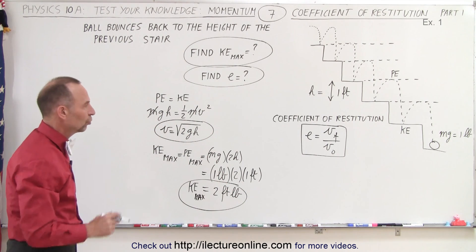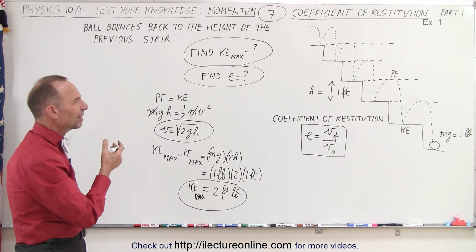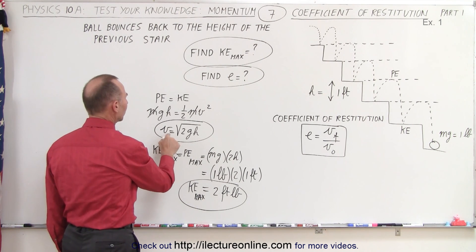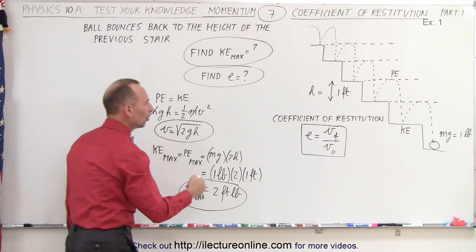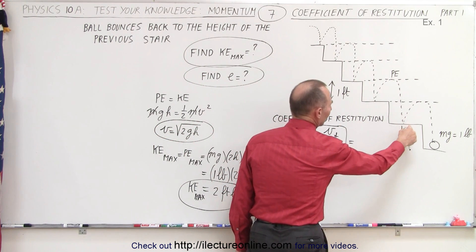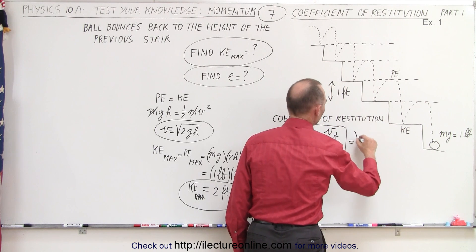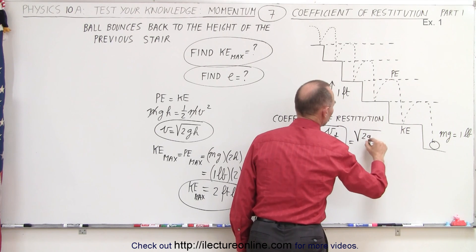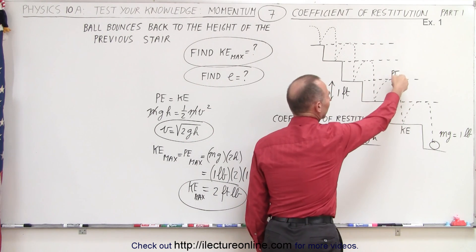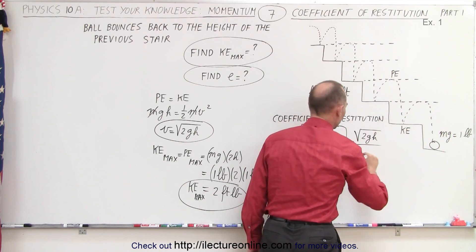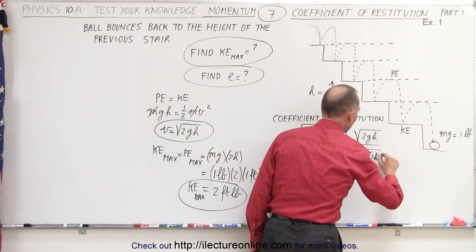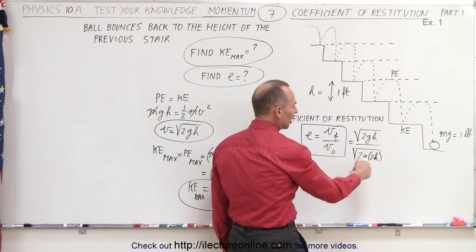But now the coefficient of restitution. How do we find the final velocity? Well, notice going back over here, the velocity is equal to the square root of 2gh. So in this case, the final velocity would be the velocity necessary to make it a height of one step. So it would be the square root of 2gh. And the initial velocity is the velocity it gains by coming down from two heights. So this would be the square root of 2g times 2h.